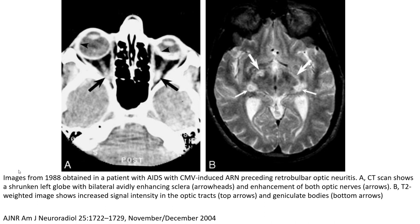Here we have images A and B. Image A is the CT showing a hyperdense sign, with a heavily enhancing scleral component and small enhancing foci. Image B is a CT tractography image showing increased signal intensity in the optic tract and lateral geniculate body. This case demonstrates optic neuritis with retrochiasmal and systemic involvement.